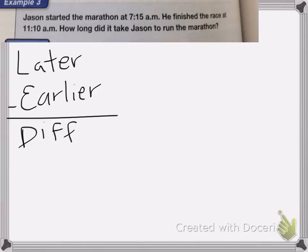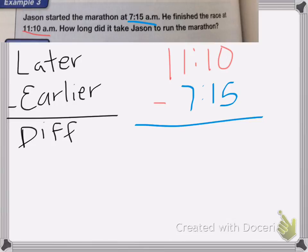So we need to do the later time, which is 11:10, minus the earlier time, which is 7:15. Now the tricky part is we'll actually need to subtract all of the minutes together. We cannot take 15 away from 10, so we need to borrow from this 1.